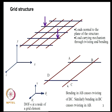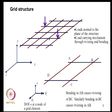Another class of planar structures are known as grid structures. There are girders in the XZ plane and the loads act along the Y-axis, which is normal to the plane of the structure. In planar frames, loads act in the same plane as the elements, but here the load acts transverse to the plane. An example is a bridge deck with longitudinal and transverse girders. A grid can be viewed as a discrete version of a plate.